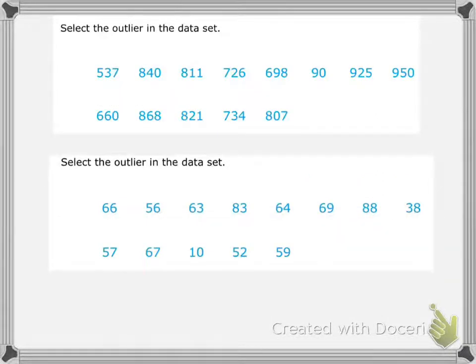All right, let's take a look at the rest of these. This top one, I'm looking at some values in the 500s, 800s, 700s, close to 700, 900s. And then we see this one here that is 90. That's really far away from the rest of those numbers that are between 500 and 950.